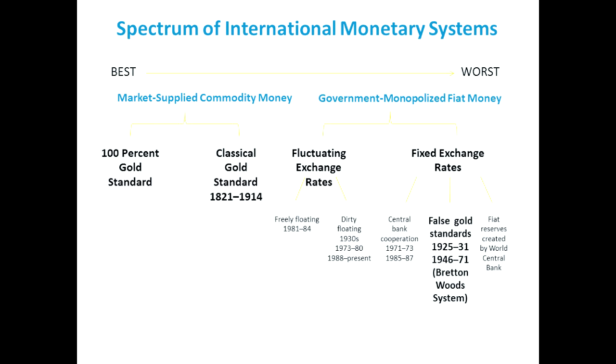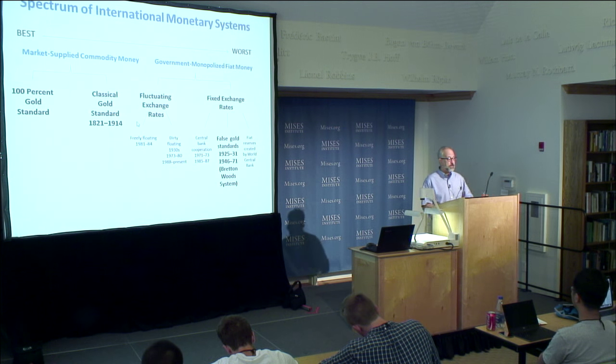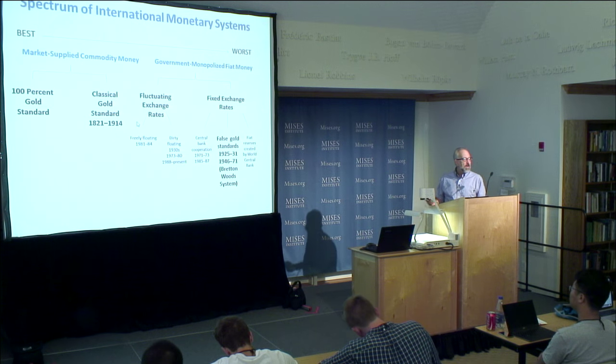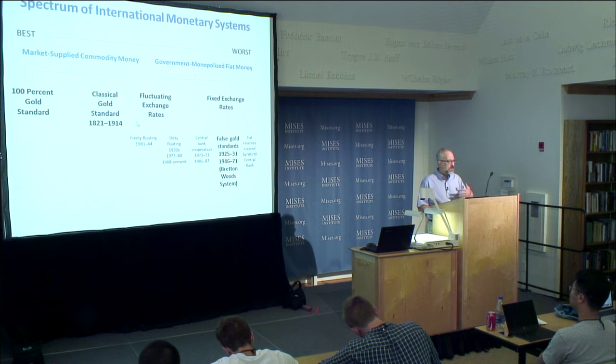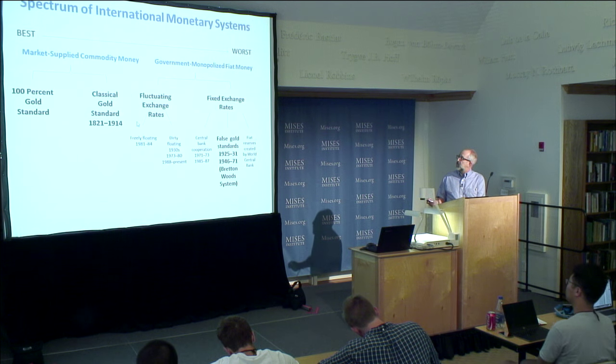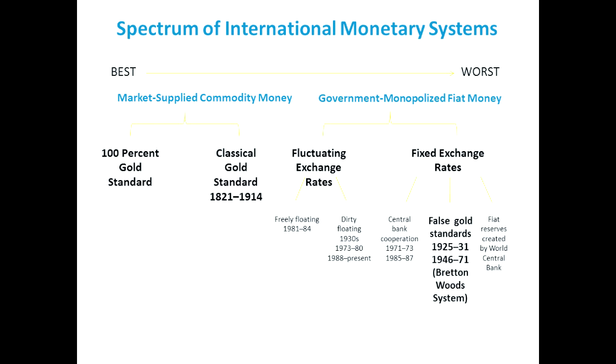Without going into too much detail, if we have fiat money, we would choose — for large countries at least — fluctuating exchange rates where the government completely refrains from interfering with the value of money established on foreign exchange markets. We don't like pegged exchange rates. If you have fiat monies issued by different national central banks, then you have different commodities and they should fluctuate in value. Once you get into the fiat money system, we would want exchange rates to tell the truth about the values of different monies.